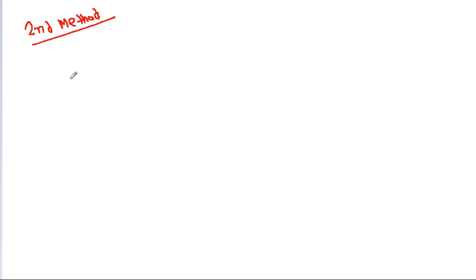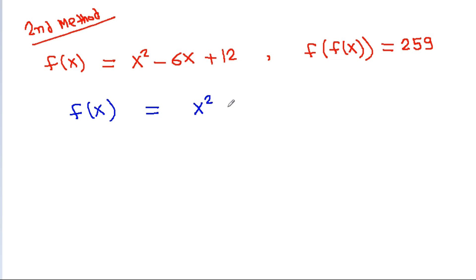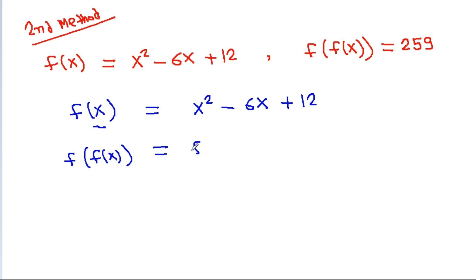This is the second method. We have f(x) equal to x squared minus 6x plus 12, and f(f(x)) is equal to 259. So f(x) equals x squared minus 6x plus 12, and if we put f(x) in place of x, then f(f(x)) will be equal to f(x) squared minus 6 times f(x) plus 12.